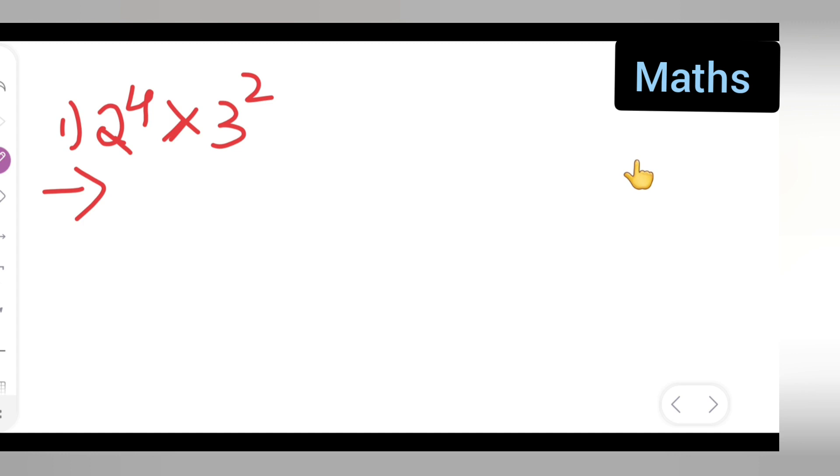So first, what you are going to write is 2 raised to power of 4 multiplied by 3 square. Now this is equal to what? Four times you'll have to write 2: 1, 2, 3, 4.